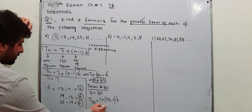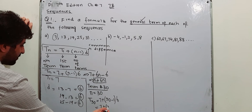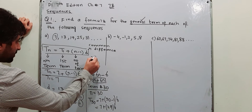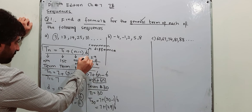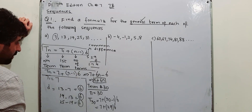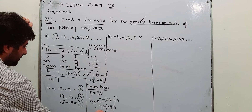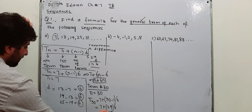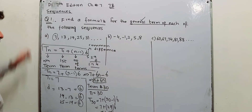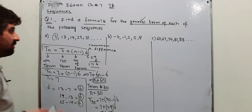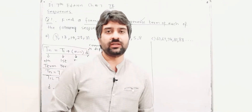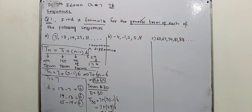Solving inside the brackets first: 30 minus 1 is 29, into 6. 29 times 6: 9 sixes are 54, 2 times 6 is 12 plus 5 carries, giving 17 — so 174. That gives 7 plus 174 equals 181. So 181 is your term number 30. This is how you find the formula for the nth term and then use it to find any term you like.